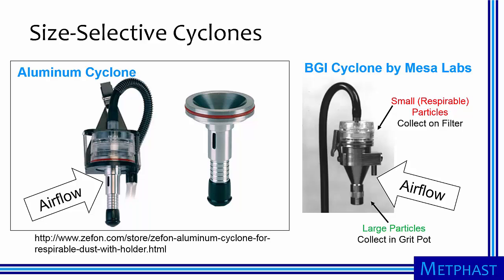Various vendors sell different size-selective cyclones, such as the aluminum and BGI respirable cyclones. Air entering the cyclone is forced to spin several times, with larger particles hitting the wall and being forced to collect in a grit pot in the tip of the cyclone. The smaller, or respirable, particles remain airborne and pass to a filter often housed in a filter cassette.